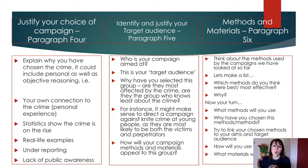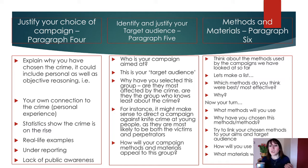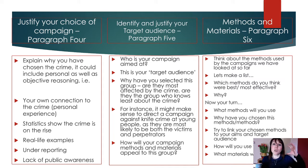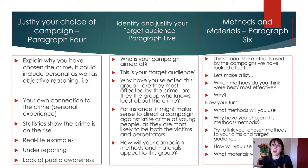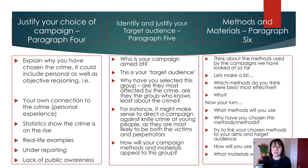Who is your campaign aimed at and why have you selected that group? Are they most affected by the crime or the group who knows the least about it? For instance, it might make sense to direct a campaign against knife crime at young people. How will your campaign methods and materials appeal to this group? In paragraph six, plan and think about the methods you're going to use — make a list. We focused on creating a poster over a leaflet because it's cheaper to print and gets information across quickly. We looked at social media because it's free to set up, and how a hashtag is easy to use. We also looked at t-shirts or hoodies.